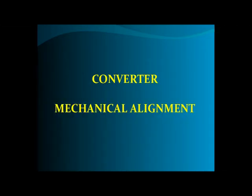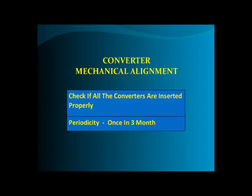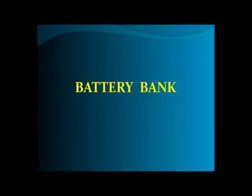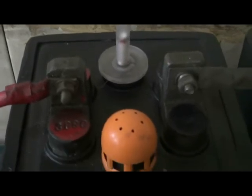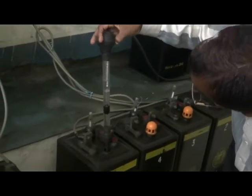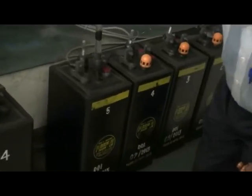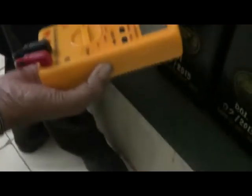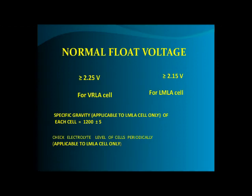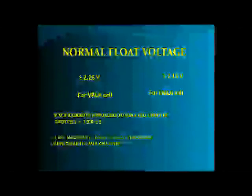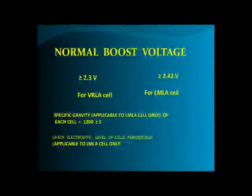Converter mechanical alignment: Check if all converters are inserted properly. Periodicity: once in 3 months. Battery bank: Check the batteries at regular intervals. Clean any sulfation found on battery terminals. Check specific gravity of each cell with a hydrometer — ideal value is 1200 ±5. Normal float voltage: 2.25V per cell for VRLA batteries and 2.15V per cell for conventional batteries. Normal boost voltage: 2.3V per cell for VRLA and 2.42V per cell for conventional batteries.